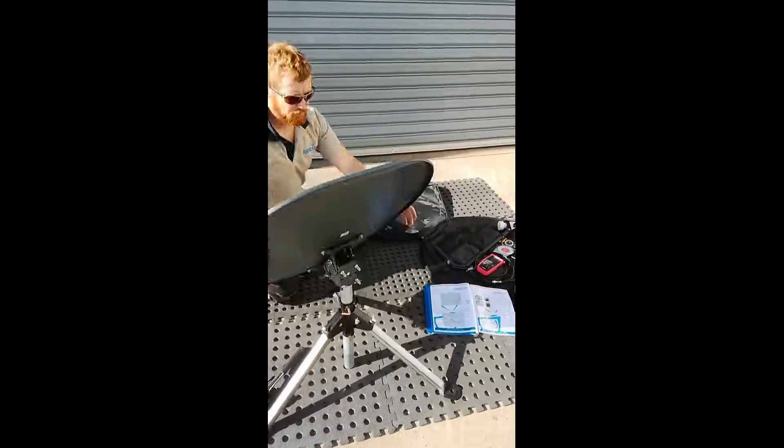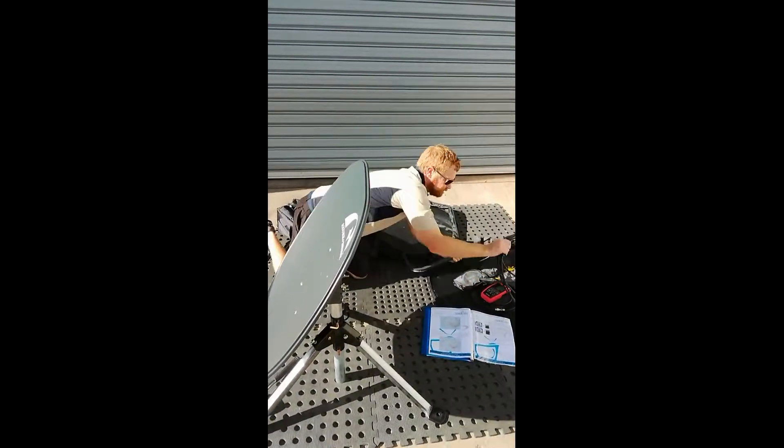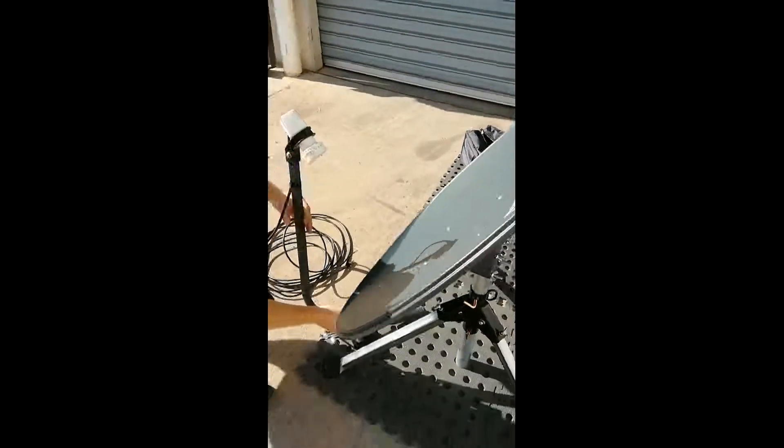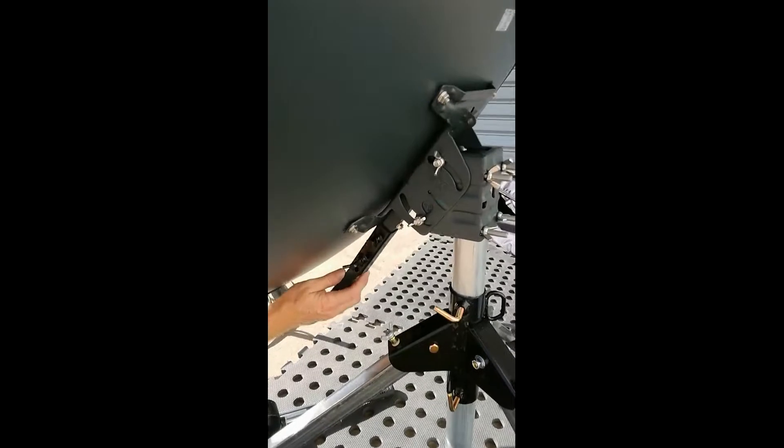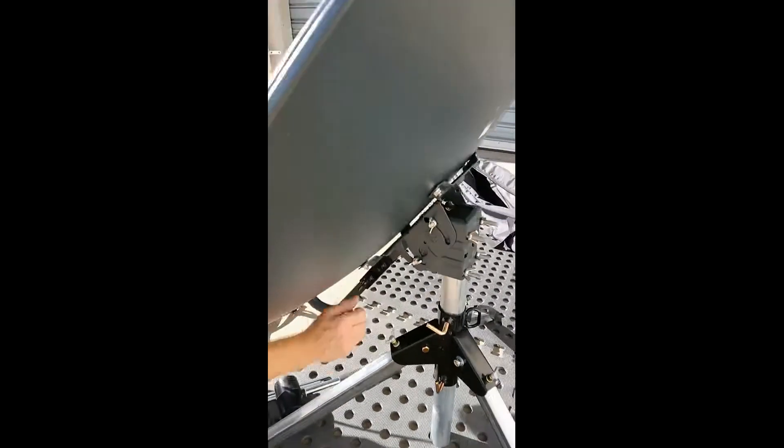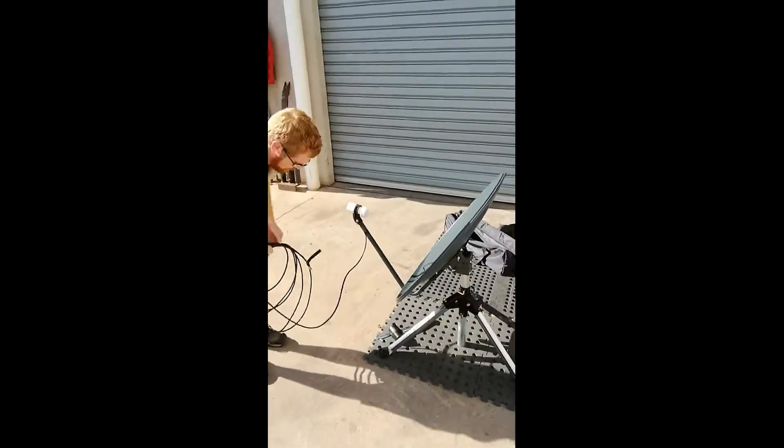We'll then put the LNB arm on. That just gets secured by sliding in the bottom and tightening up with one wing nut. And you can do that one up tight. Then run the long cable out to the trailer.